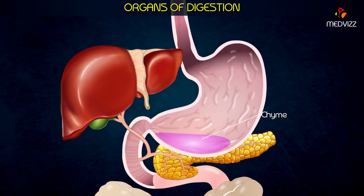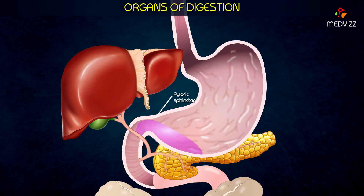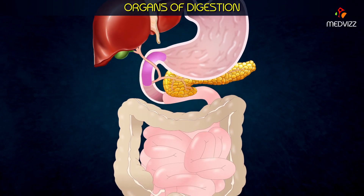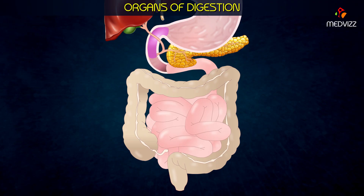Chyme exits the stomach through the pyloric sphincter and enters the small intestine, the major site of nutrient absorption. The small intestine consists of three parts: the duodenum, jejunum, and ileum.